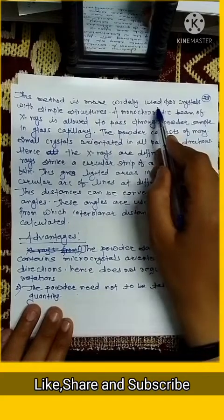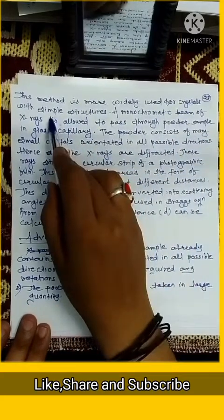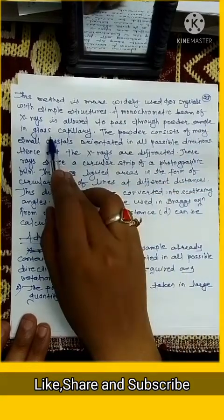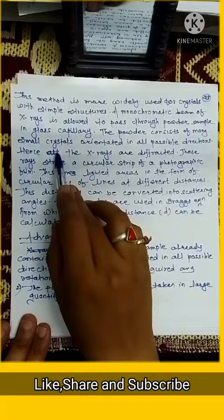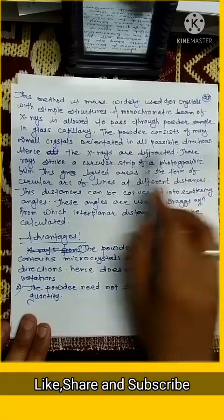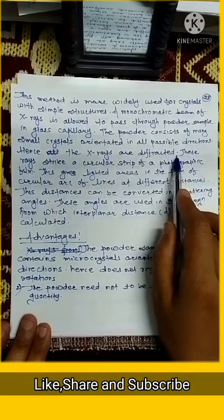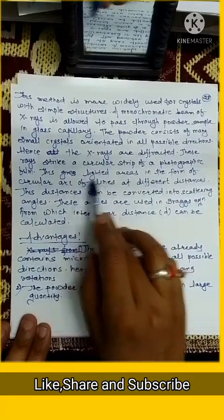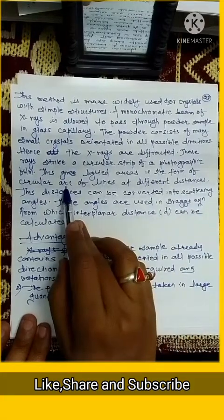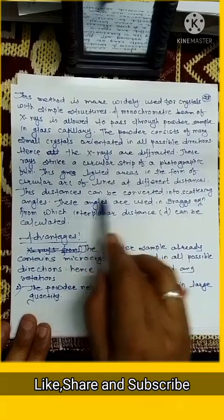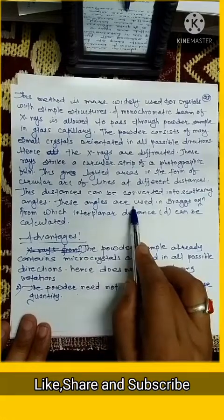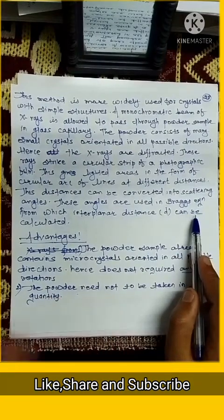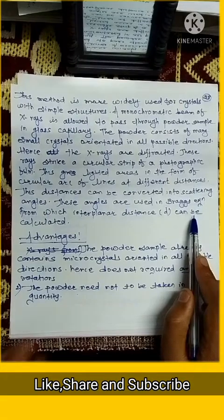This method is more widely used for crystals with simple structures. A monochromatic beam of X-ray is allowed to pass through powder sample in a glass capillary. The powder consists of many small crystals oriented in all possible directions. Here the X-rays are diffracted. This ray strikes a circular streak of photographic film. This gives lighted areas in the form of circular arcs or lines at different distances.